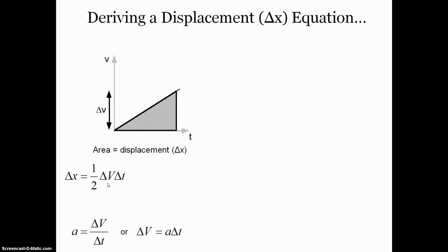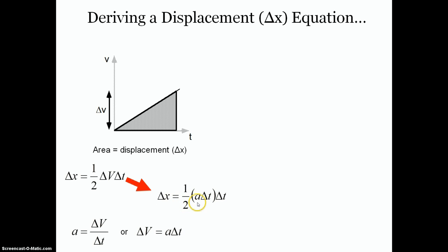Now we're going to change this a little bit. Remember that acceleration equals the change in velocity over the change in time — this came from the slope of our velocity versus time graph, which was our definition of acceleration. If we rearrange for change in velocity, we get change in velocity equals acceleration times time. Substituting that in, displacement becomes one-half times acceleration times time, multiplied by time again — so displacement equals one-half times acceleration times time squared.